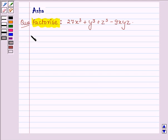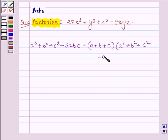First let us learn a simple identity which says a cube plus b cube plus c cube minus 3abc is equal to a plus b plus c into a square plus b square plus c square minus ab minus bc minus ca.